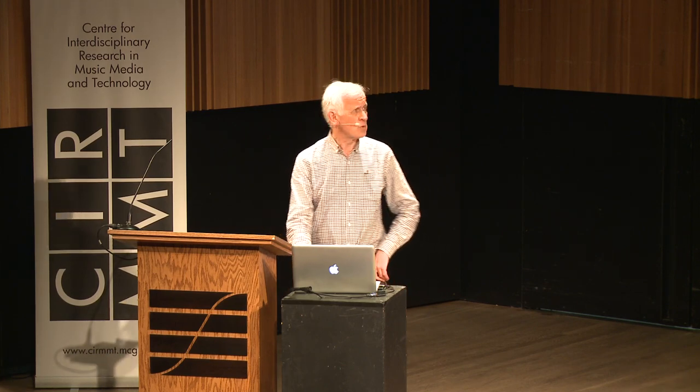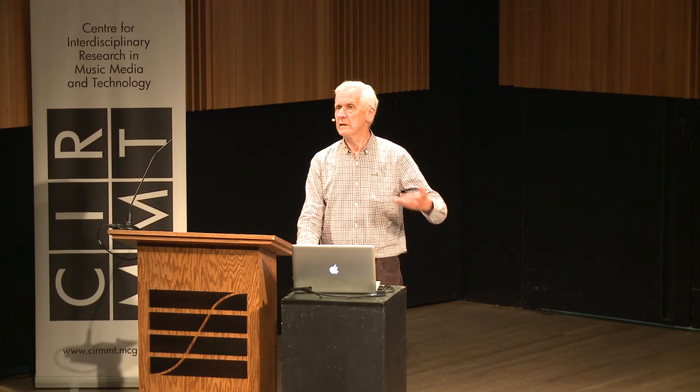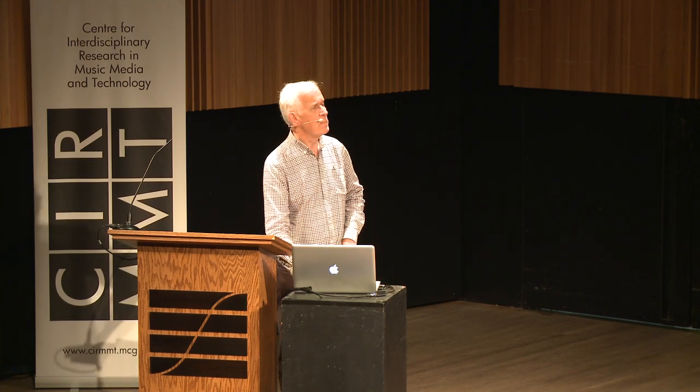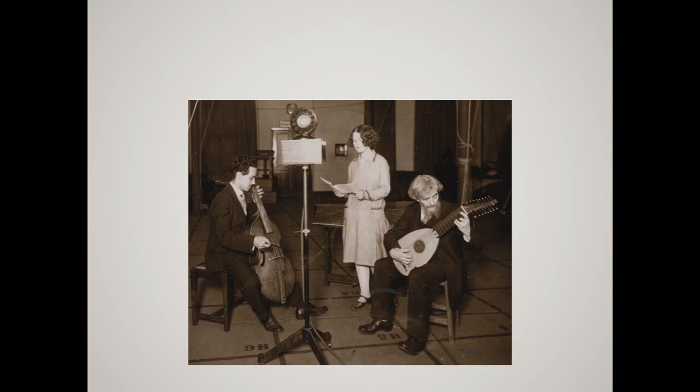Diana Poulton was a former student of Arnold Dolmetsch, who was a great pioneer in the historical performance of music — that is, performance which takes account of the way documents, including printed documents, tell us it should be performed at any particular period. There's a picture of him with two members of his family: him playing the lute, Rudolf Dolmetsch who died during World War II, and his sister Cecile singing.